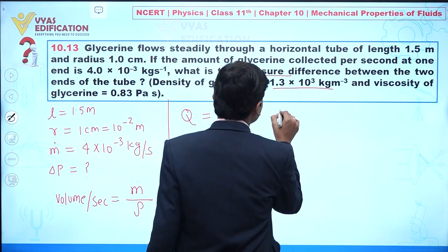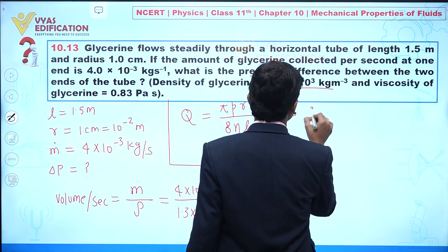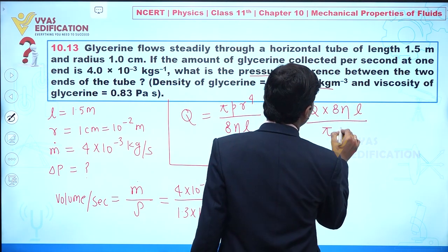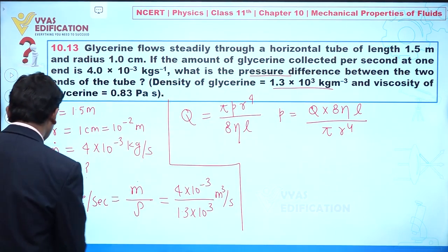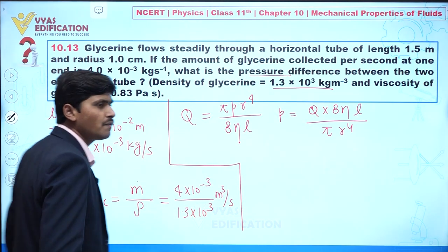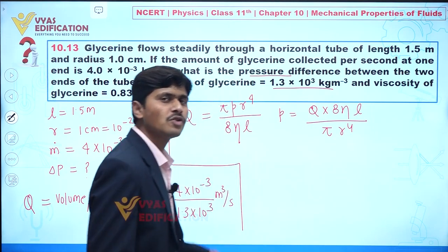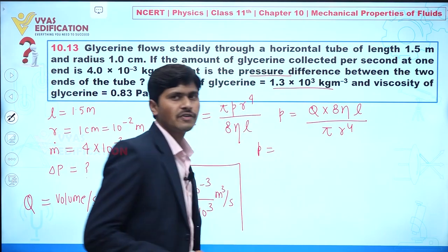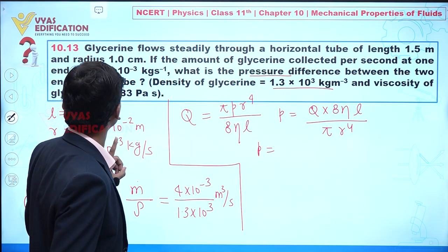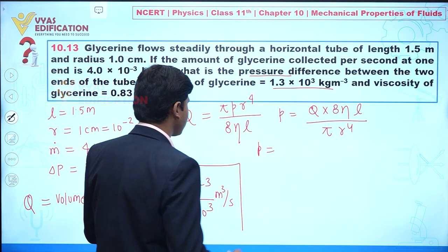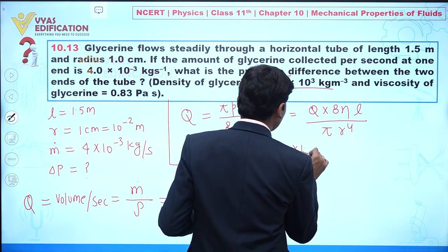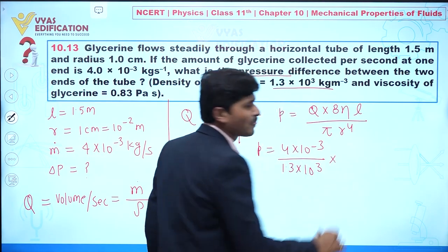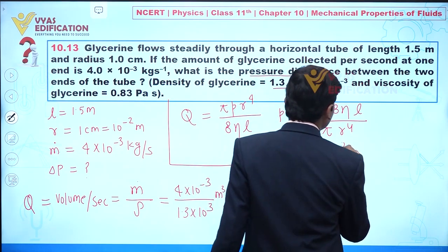The volume flow rate is given by Q = πPr⁴ / (8ηl). Since our objective is to calculate the pressure difference P, I can rearrange this as: P equals Q multiplied by 8ηl, divided by πr⁴. Here Q is the volume flow rate per second. So the pressure difference is given by substituting the value of Q, which is 4 into 10 to the power minus 3 divided by 1.3 into 10 to the power 3.